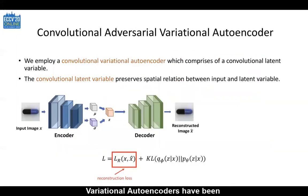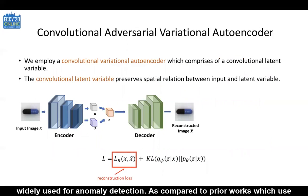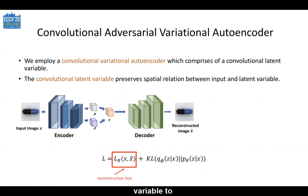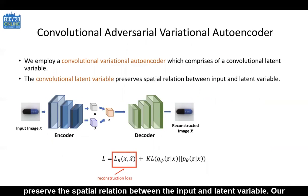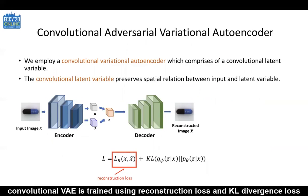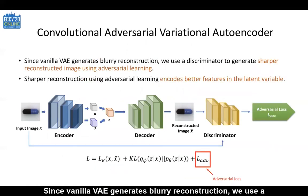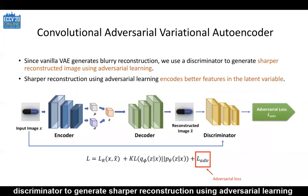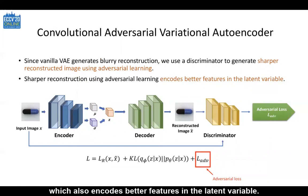Variational autoencoders have been widely used for anomaly detection. As compared to prior works, which use a flattened latent variable, we employ a Convolutional Variational Autoencoder with a Convolutional Latent variable to preserve the spatial relation between the input and latent variable. Our Convolutional VAE is trained using reconstruction loss and KL divergence loss. Since Vanilla VAE generates blurry reconstruction, we use a discriminator to generate sharper reconstruction using adversarial learning, which also encodes better features in the latent variable.